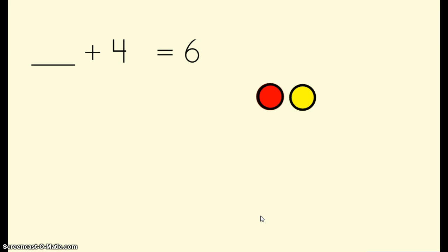Let's try some without a part part whole mat. In this number sentence I want to find out what plus 4 equals 6. This is our unknown addend. We don't know what number plus 4 equals 6.